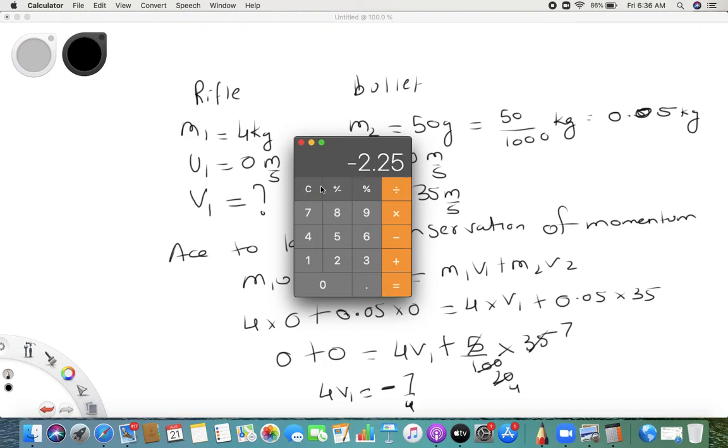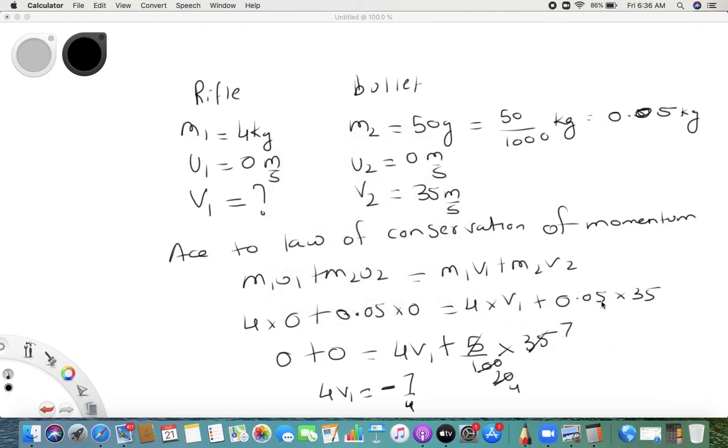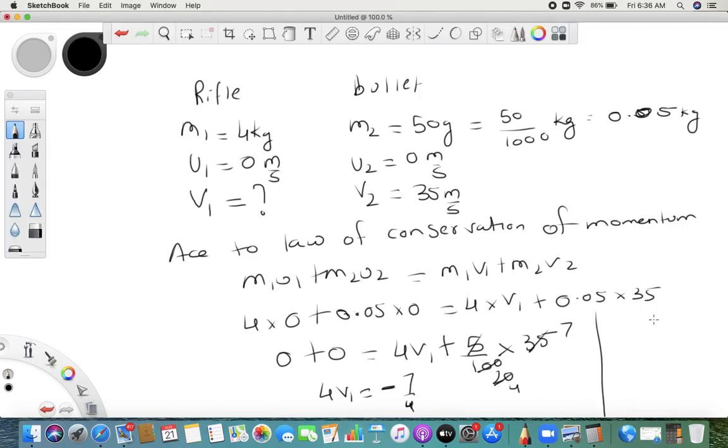We will get 2.25, right? So I will just write down here: 4v1 is equal to minus 1.75. v1 is equal to minus 1.75.